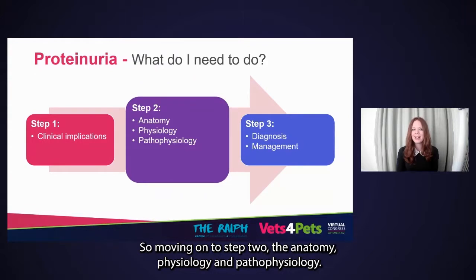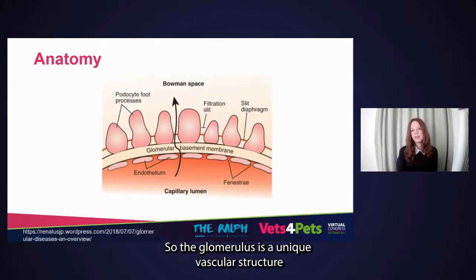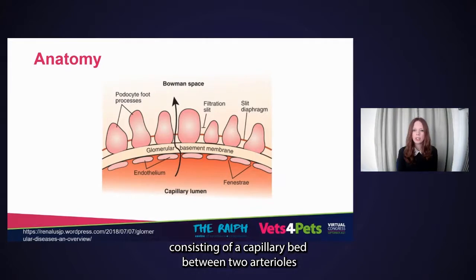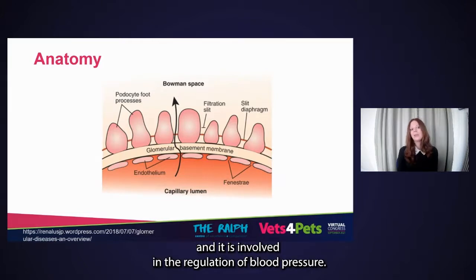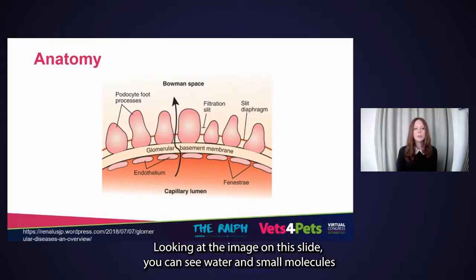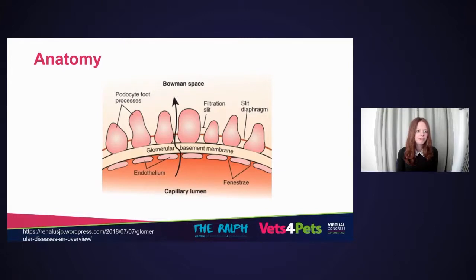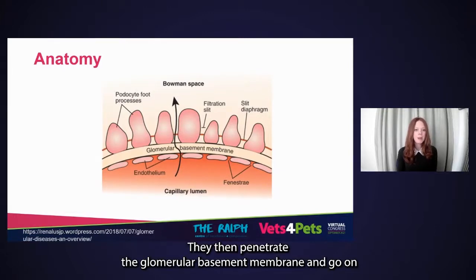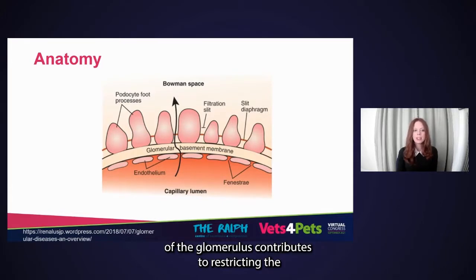Moving on to step two: the anatomy, physiology, and pathophysiology. The glomerulus is a unique vascular structure consisting of a capillary bed between two arterioles. In healthy animals, the glomerulus filters 20% of cardiac output and is involved in the regulation of blood pressure. Looking at the image on this slide, you can see water and small molecules cross the fenestrated vascular endothelial barrier by force of transcapillary pressure. They then penetrate the glomerular basement membrane, cross the podocyte slit diaphragm, and enter into the glomerular filtrate. Size and charge selectivity of the glomerulus contributes to restricting the passage of macromolecules such as proteins.